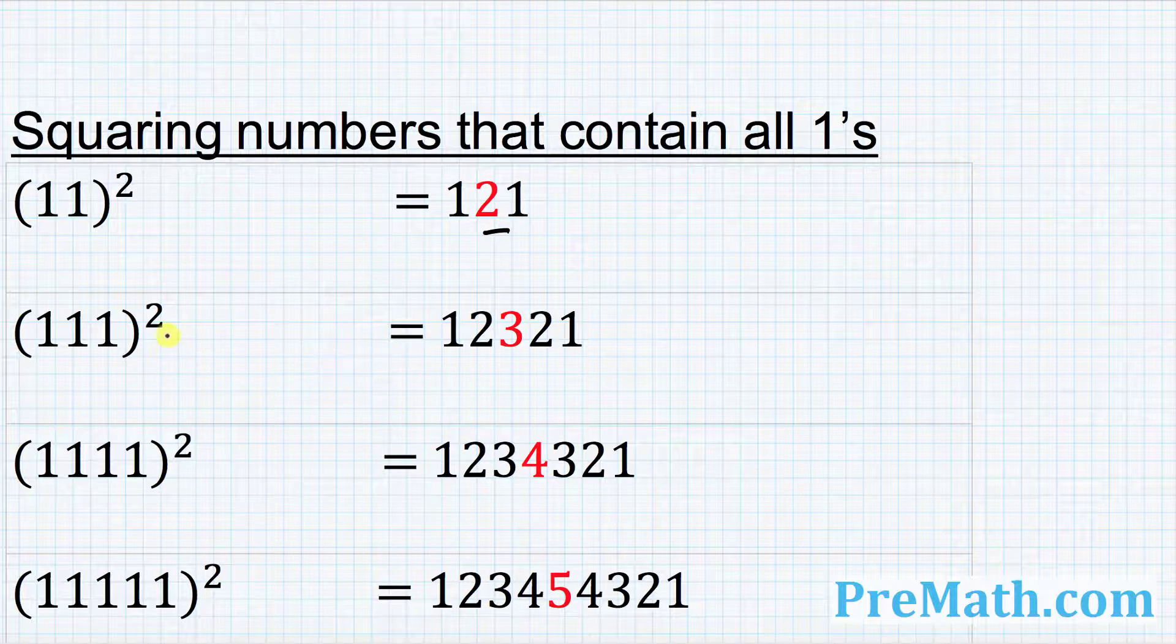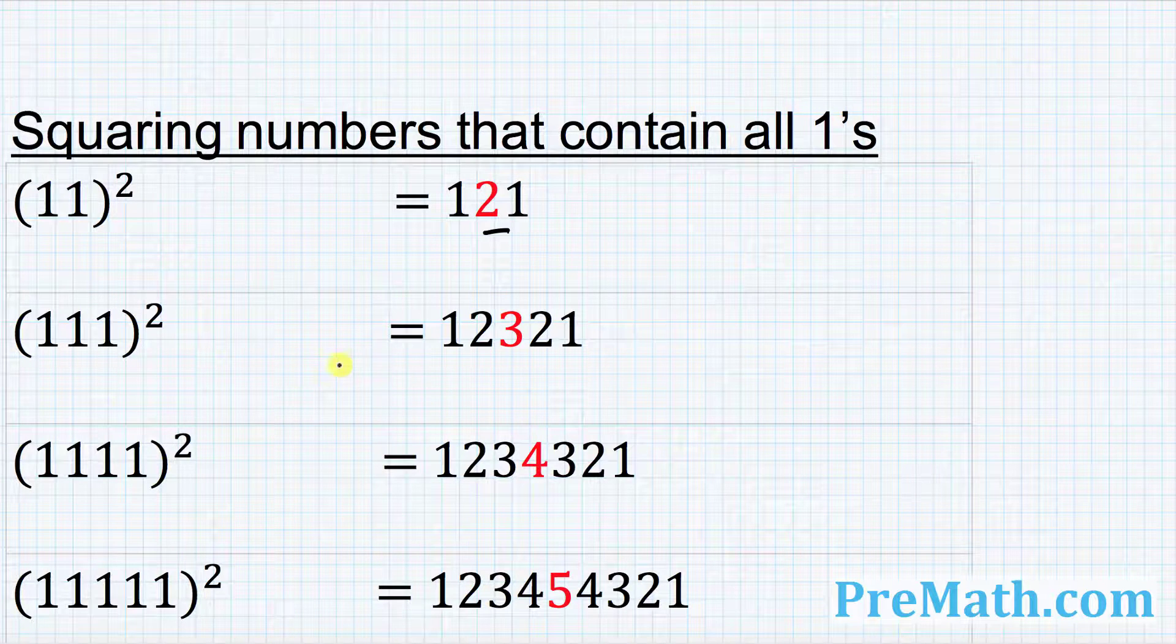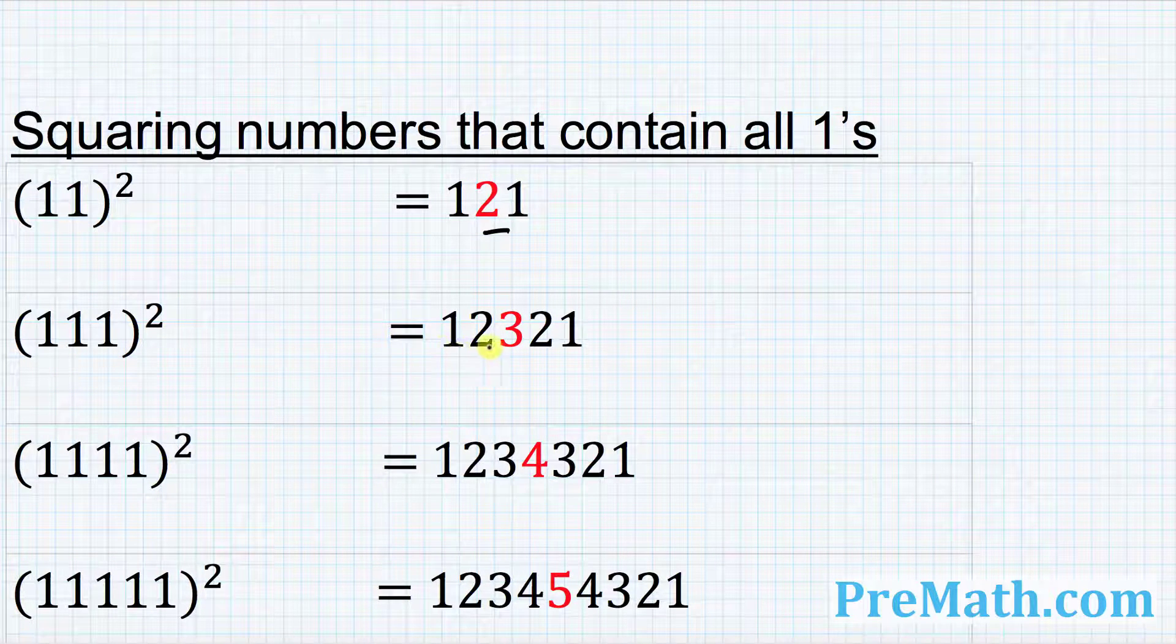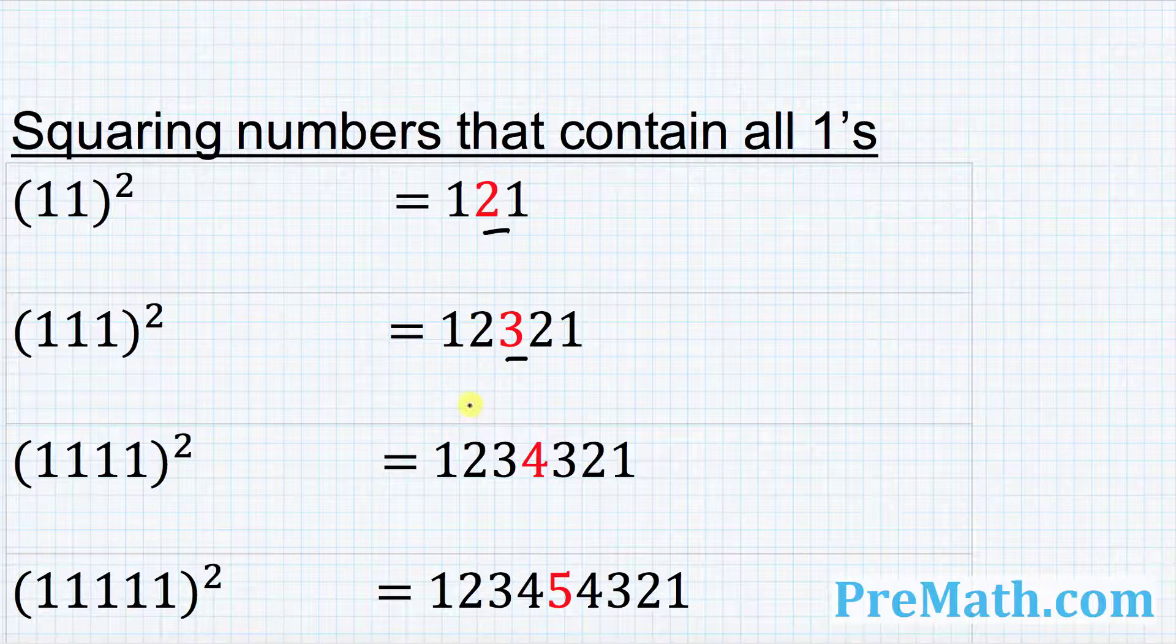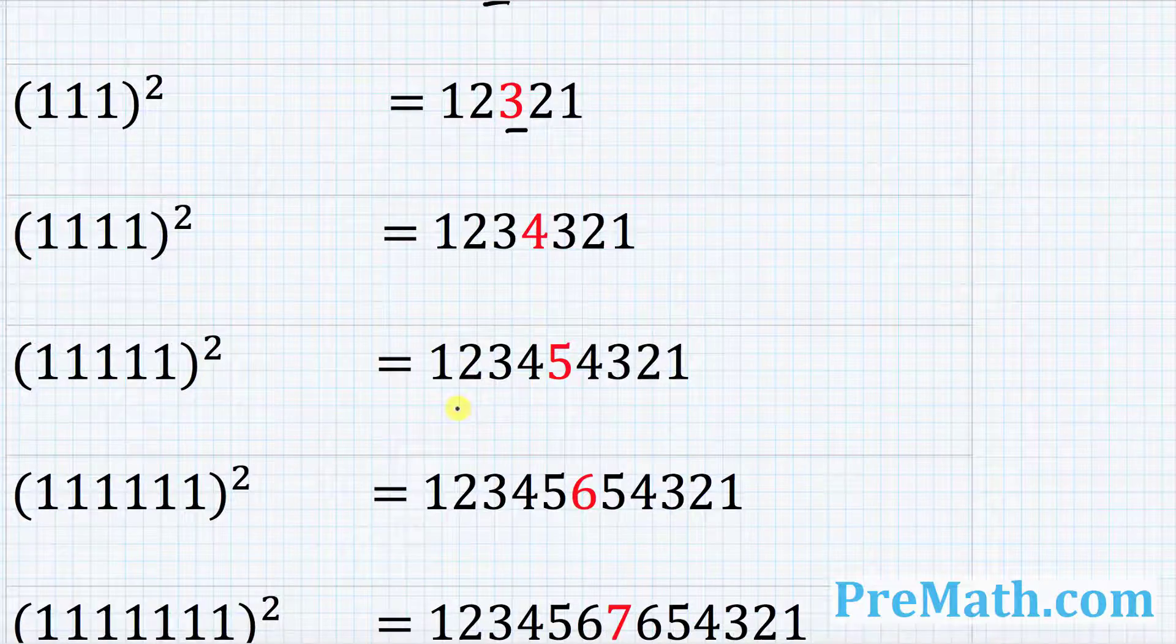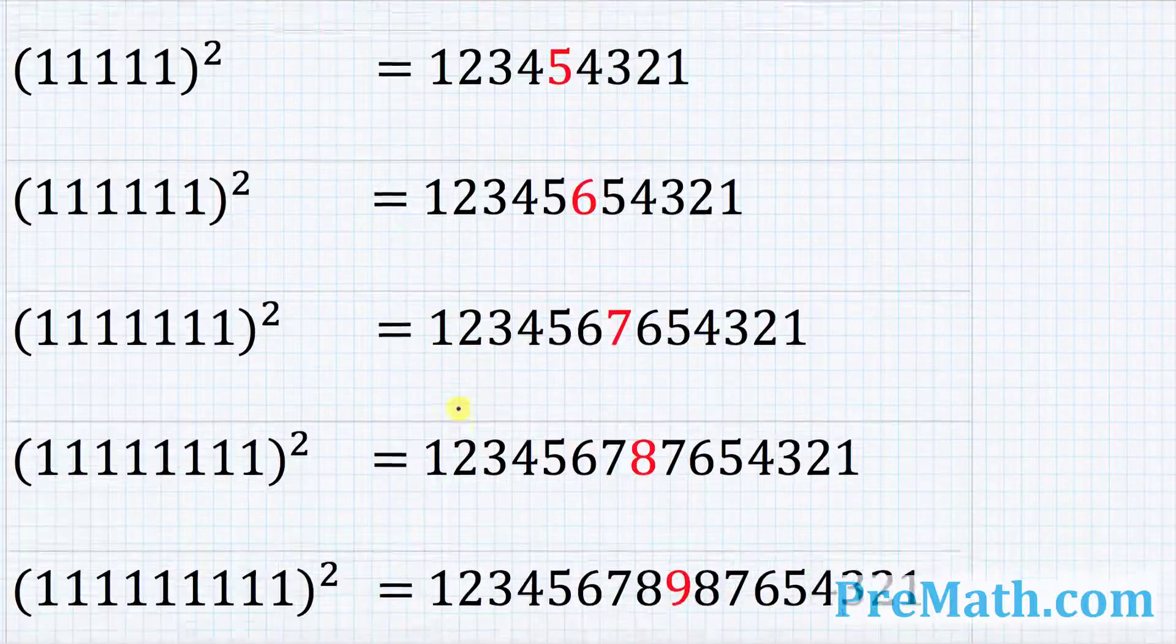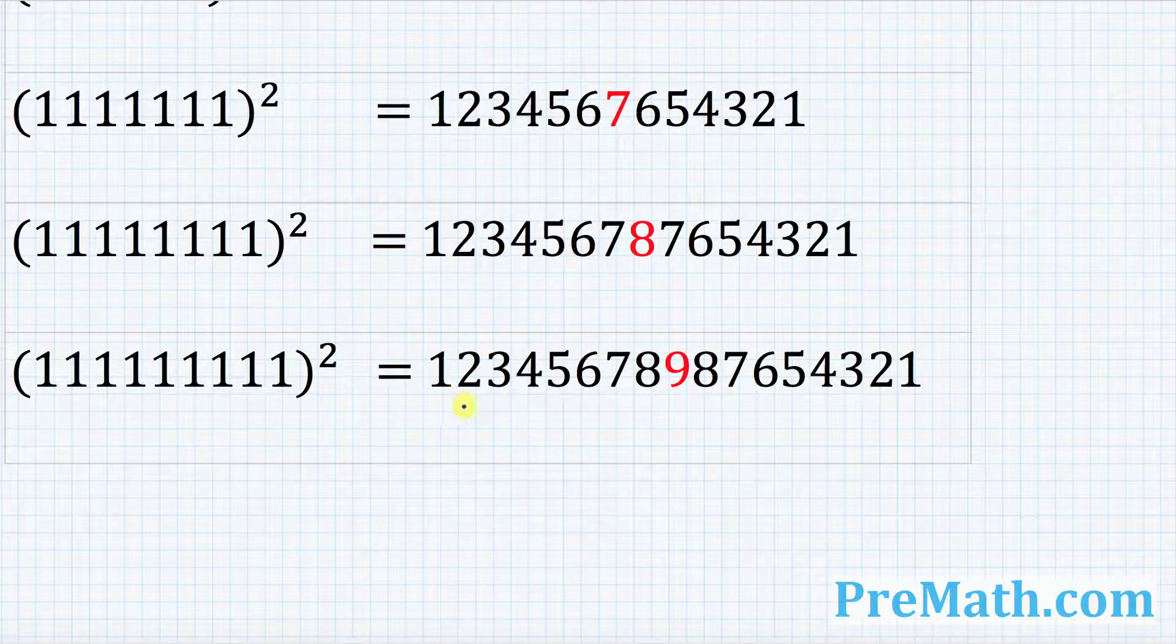111 power 2 squared equals to what? So obviously there are three digits. So you put three in the middle so it becomes one, two, three, two, one. And likewise you can see the pattern. Nice pattern. And that's pretty much it.